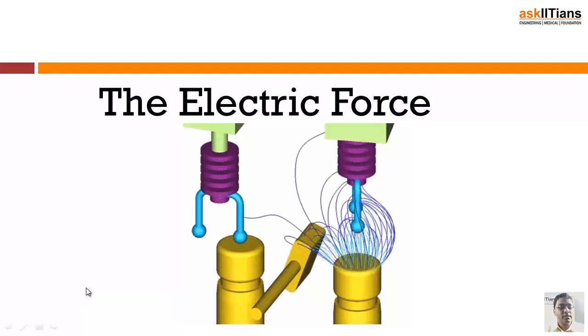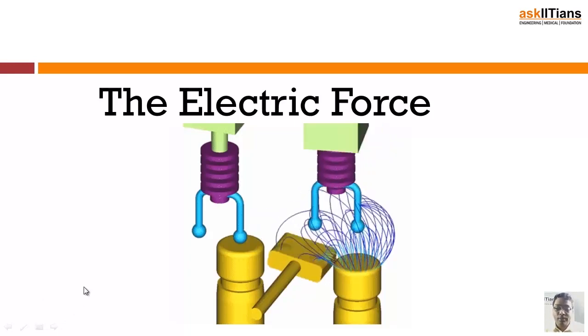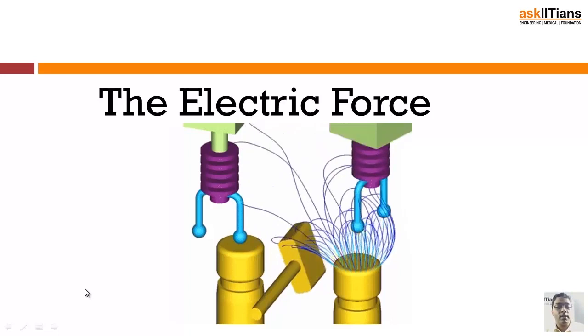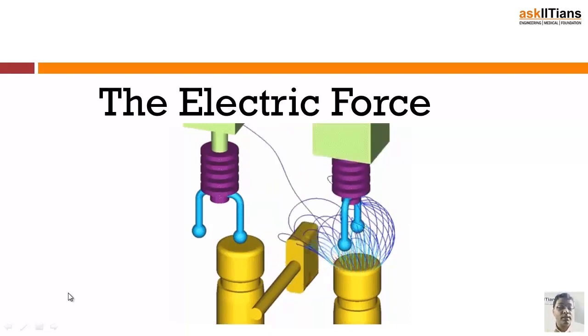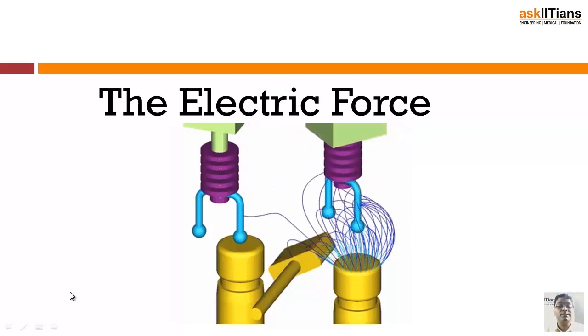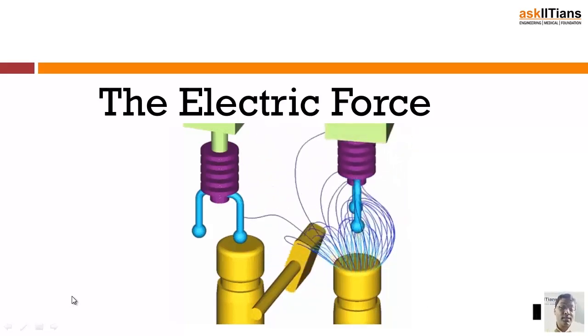We are going to devise a rule known as Coulomb's rule, which will tell us what exactly is the force that exists between any two charged objects, irrespective of their size and shape. The force that one charged object exerts on the other is defined as the electric force. Since we are talking about charges at rest, this is what is known as the electrostatic force.